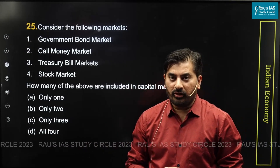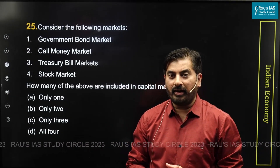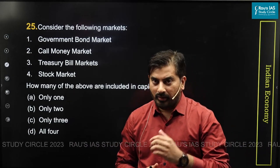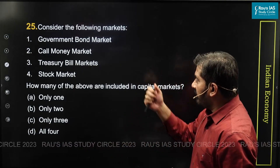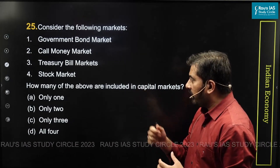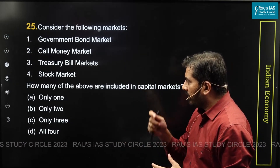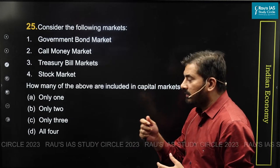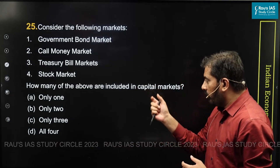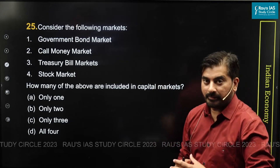Let us now take up question number 25, which had appeared in Set A of the Prelims 2023. The question here is: consider the following markets — government bond market, call money market, treasury bill market, and the stock market. How many of the above are included in the capital market?